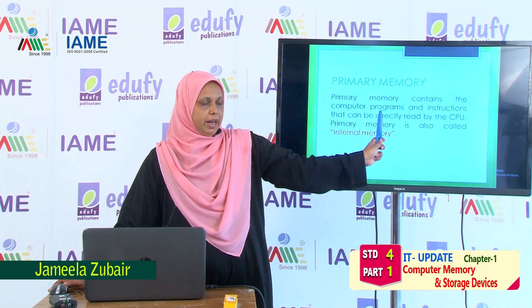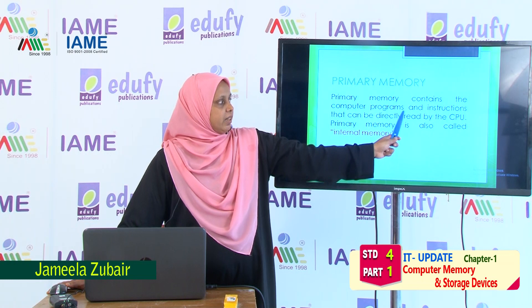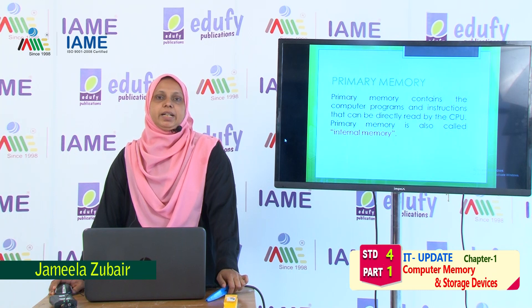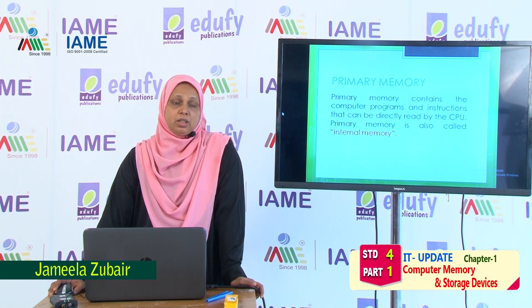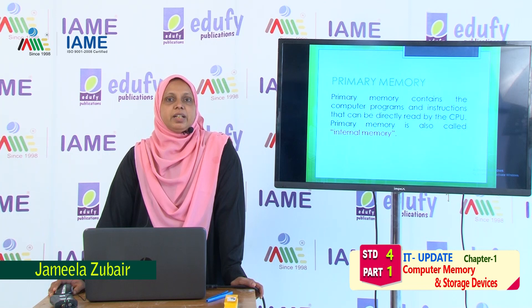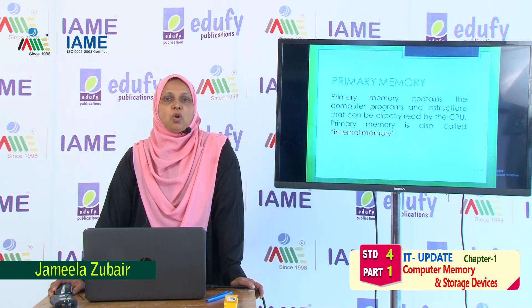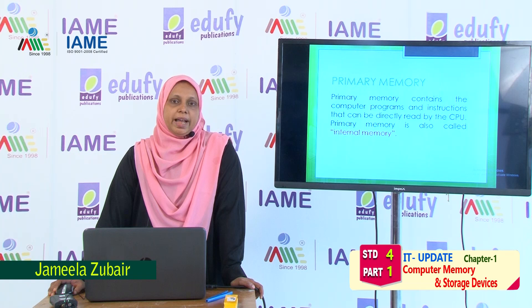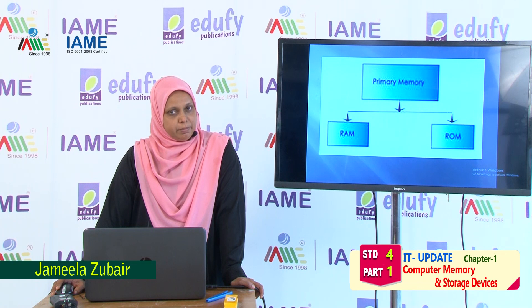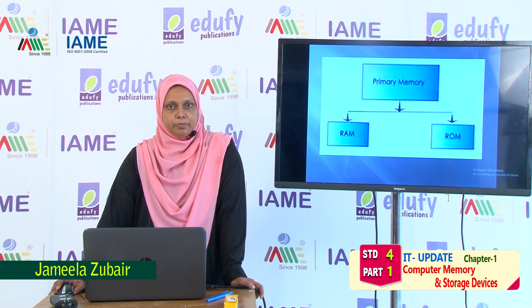Primary memory contains the computer programs and instructions that can be directly read by the CPU. Whatever instructions we give — those are directly read by the CPU. Primary memory is also called internal memory. Primary memory is further divided into two types: RAM and ROM.